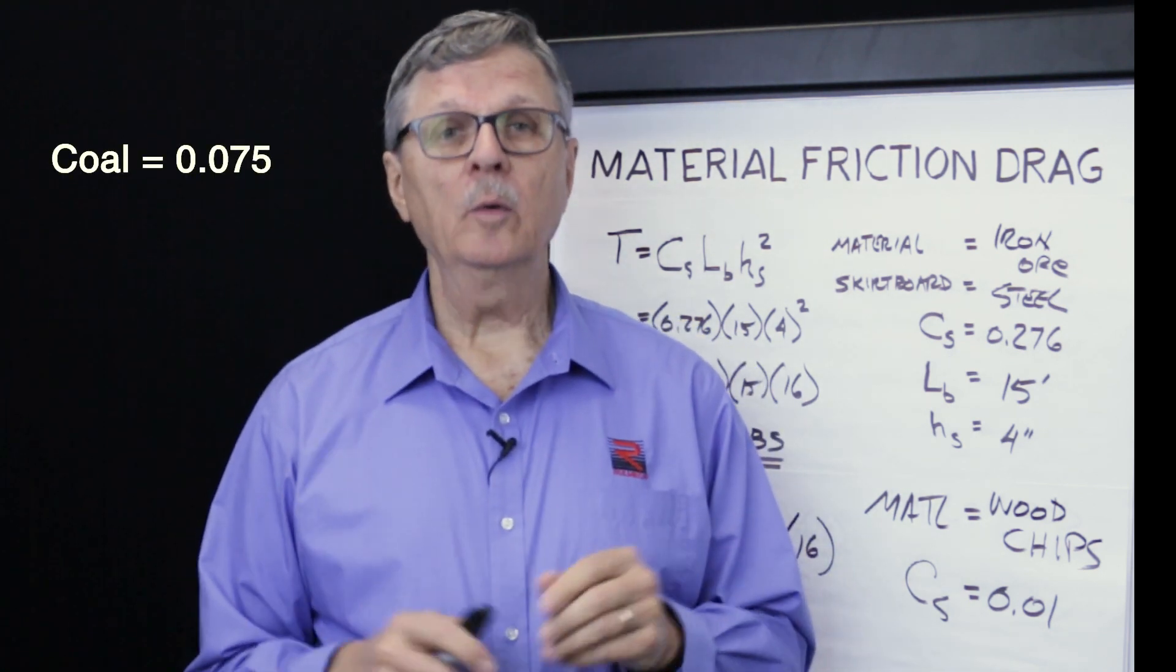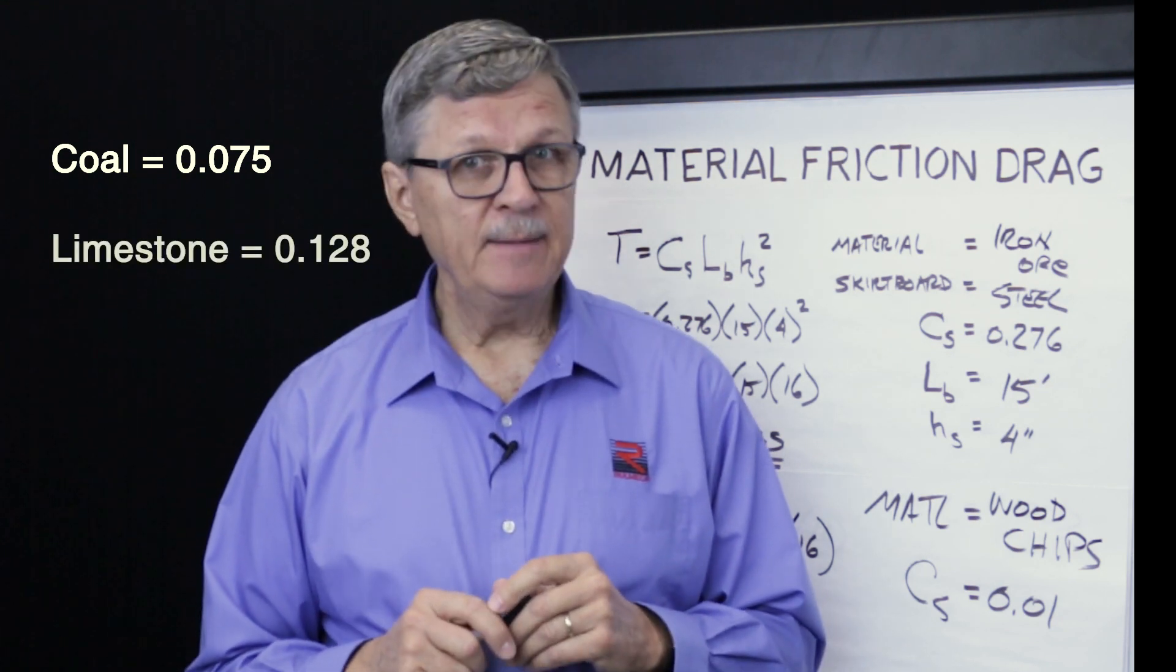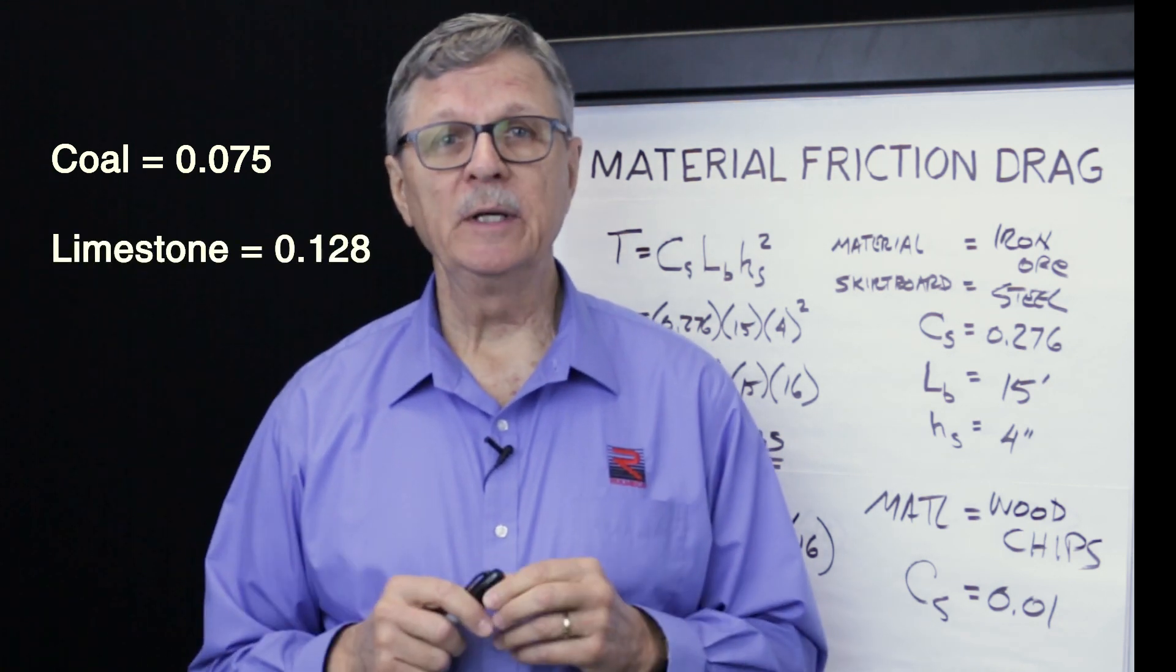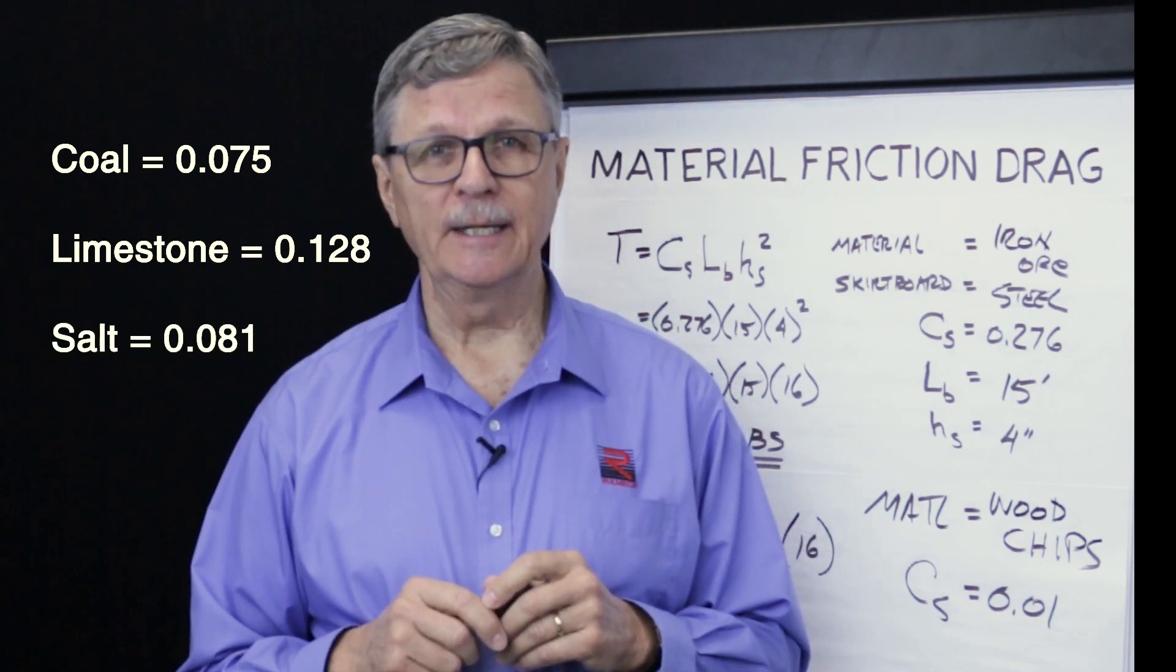For example, bituminous coal has a frictional coefficient of 0.075. Limestone has a frictional coefficient of 0.128. And salt has a frictional coefficient of 0.081.